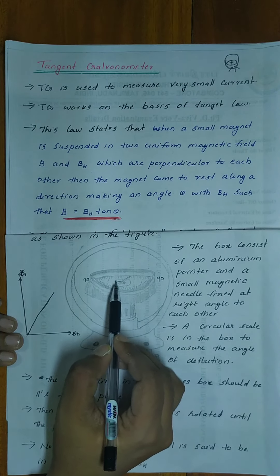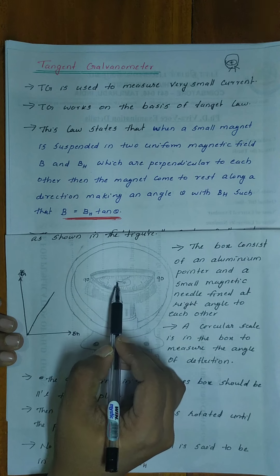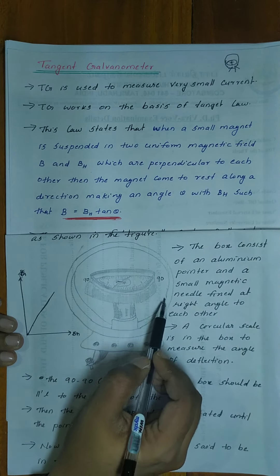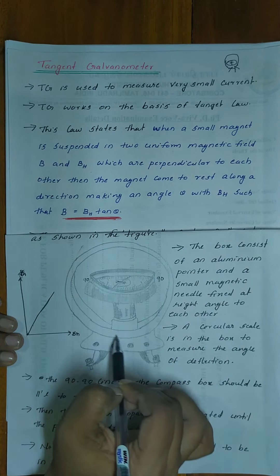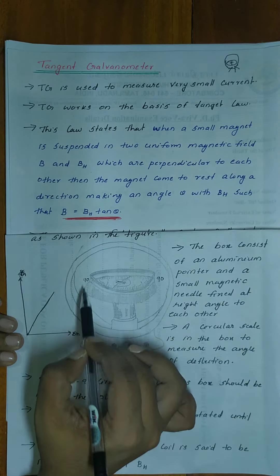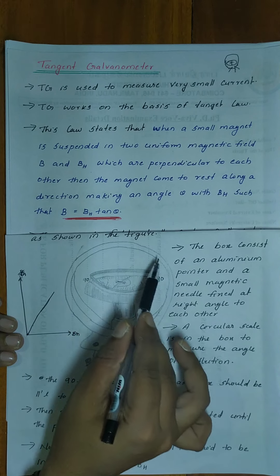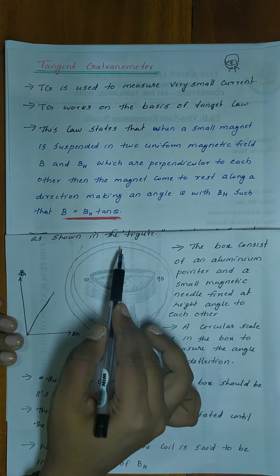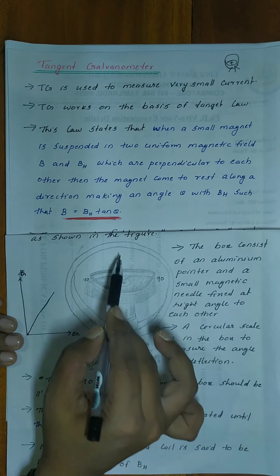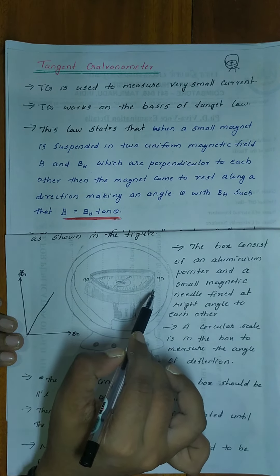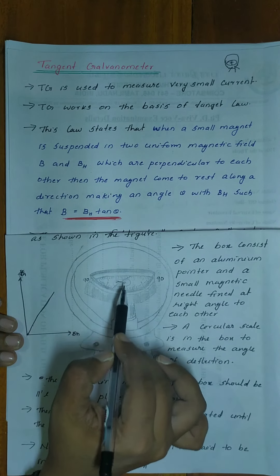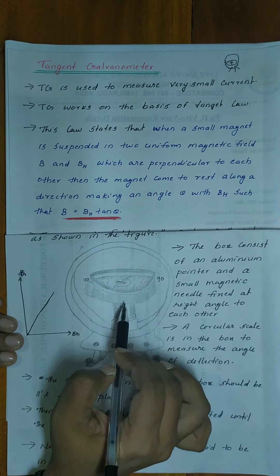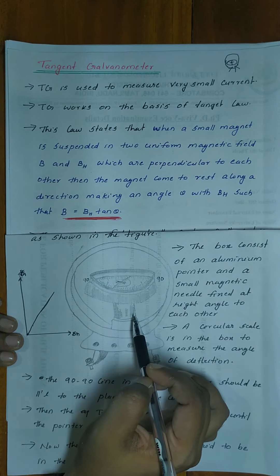The magnet is aligned in the earth's magnetic field in the north-south direction. It is aligned in the earth's horizontal magnetic field, and the coil plane is perpendicular to the earth's horizontal magnetic field.